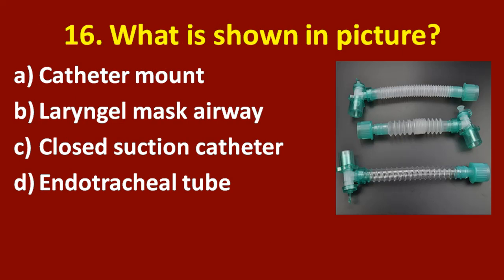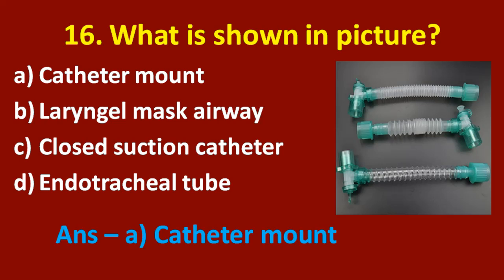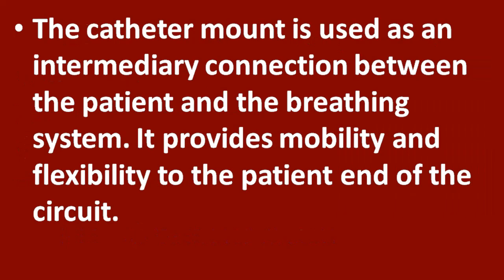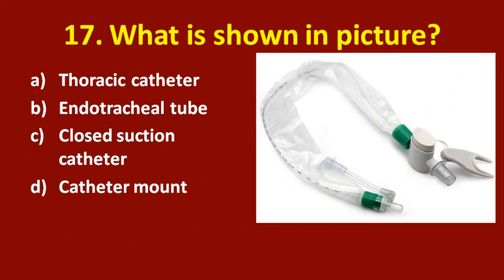Sixteenth question: what is shown in the picture? Option A: catheter mount. Option B: laryngeal mask airway. Option C: closed suction catheter. Option D: endotracheal tube. The correct answer is option A, catheter mount. The catheter mount is used as an intermediary connection between the patient and the breathing system. It provides mobility and flexibility to the patient end of the circuit.